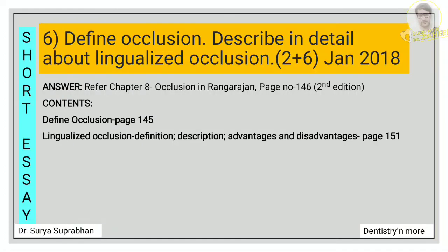Question 6: define occlusion and describe in detail about lingualized occlusion. First define occlusion, write about the three types of occlusion in CD, and then write in detail about lingualized occlusion. For lingualized occlusion: define it, give a short description, and write the advantages and disadvantages. Everything is given in page number 151.